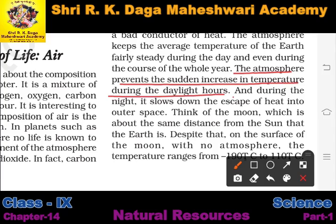The atmosphere prevents the Earth's temperature from increasing too much during the day because a lot of radiation comes from the sun. At night, it slows down the escape of heat into outer space, so the Earth's temperature does not drop too low either.